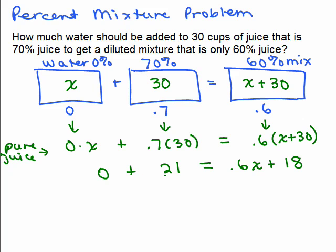So 0 plus 21 is 21. I'm going to subtract 18 from both sides to get 0.6X equals 3. So I'm going to have to divide by 0.6.